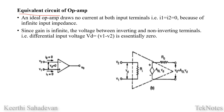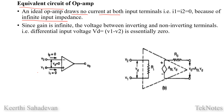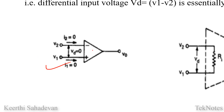We have already studied the basic block diagram and the parameters. Now we are going to learn the equivalent circuit of op-amp. We are going to learn about infinite input impedance. Input resistance is infinite — that is the ideal parameter. Ideally, op-amp draws no current at its input terminals. Input resistance is infinite in the ideal case.